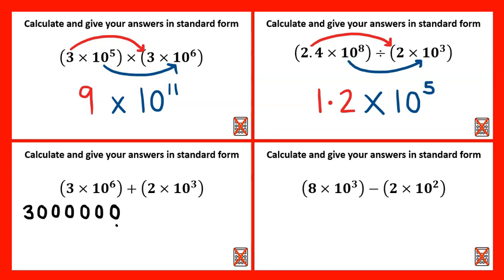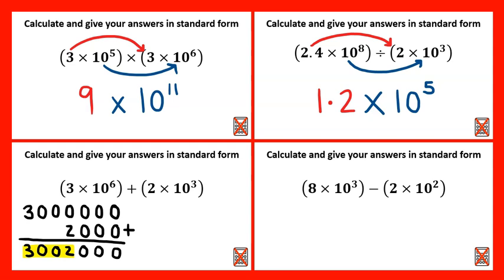Adding this onto two thousand, just lining our numbers up from the right-hand side. Adding these together we can now see it as an ordinary number and we can change this back into standard form. The significant figures are three zero zero two, so between one and ten: three point zero zero two. Times by ten to the power of one, two, three, four, five, six.